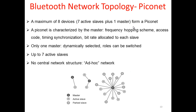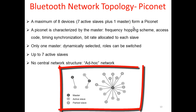One of the basic topologies of Bluetooth is the piconet. A maximum of eight devices — seven active slaves plus one master — form a piconet. A piconet is characterized by a master frequency hopping scheme, access code, timing synchronization, and bit rate allocated to each slave. Only one master exists, but the dynamically selected role can be switched. There is no central network structure, and any slave can become a master at any time.